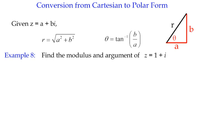In summary, what we're seeing here is that given a complex number in Cartesian form where you know its real and imaginary parts, we can convert that into polar form by saying that the modulus, which is an R value, is the square root of A squared plus B squared.